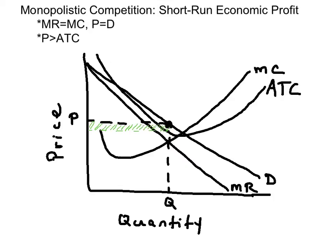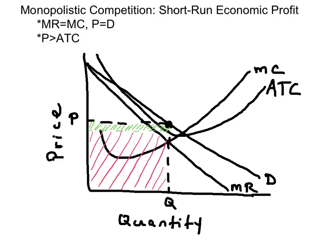The per-unit economic profit is price minus ATC. The area of total economic profit is price minus ATC times the quantity, which is the area of the rectangle shaded green. The firm's total economic cost is the area underneath the economic profit, and the firm's total revenue includes both the economic profit and the total economic cost.